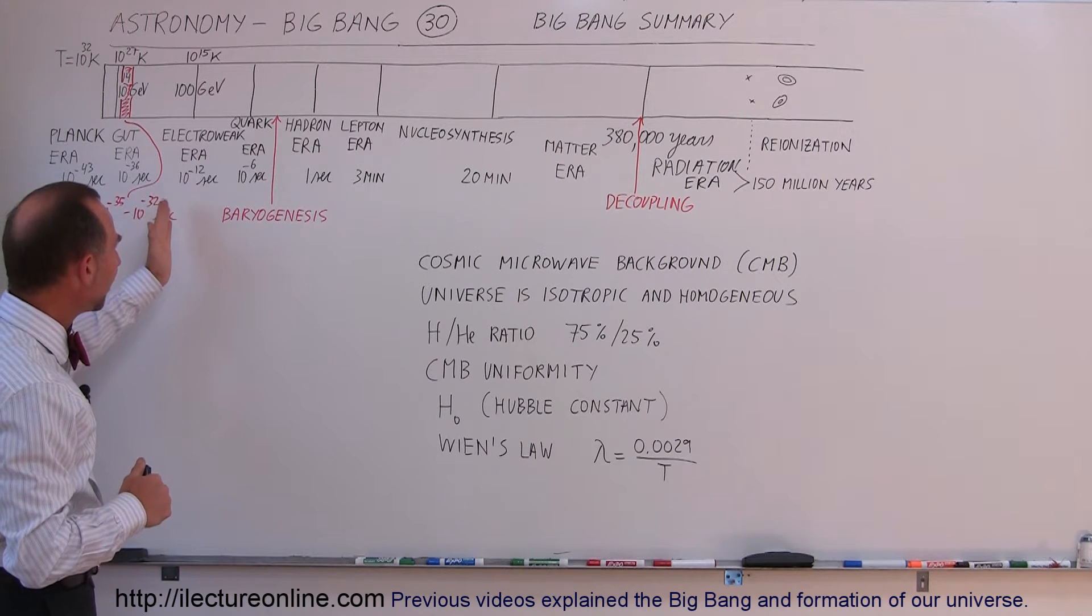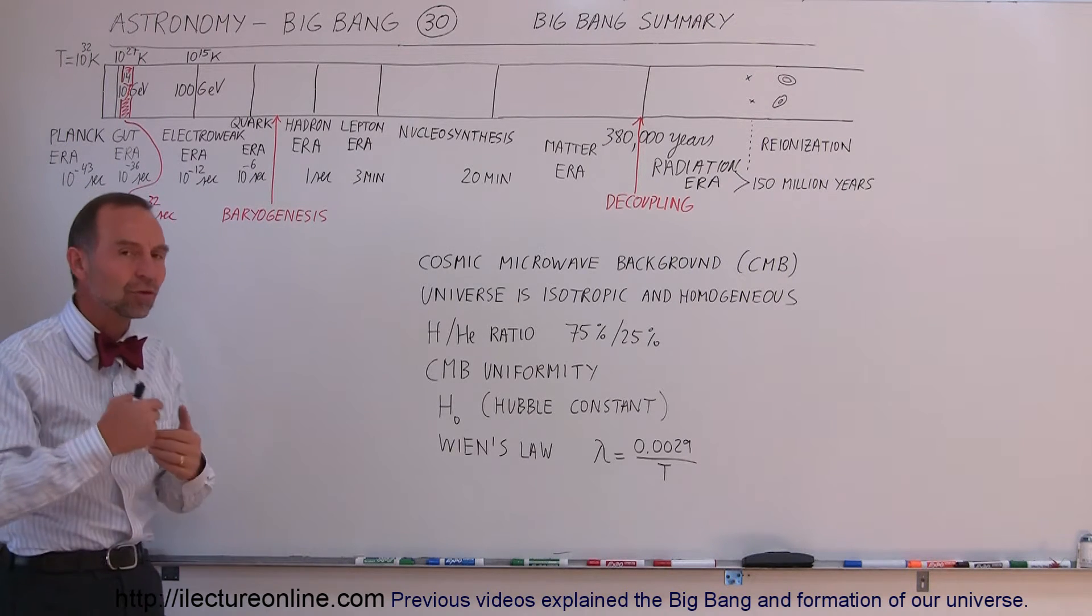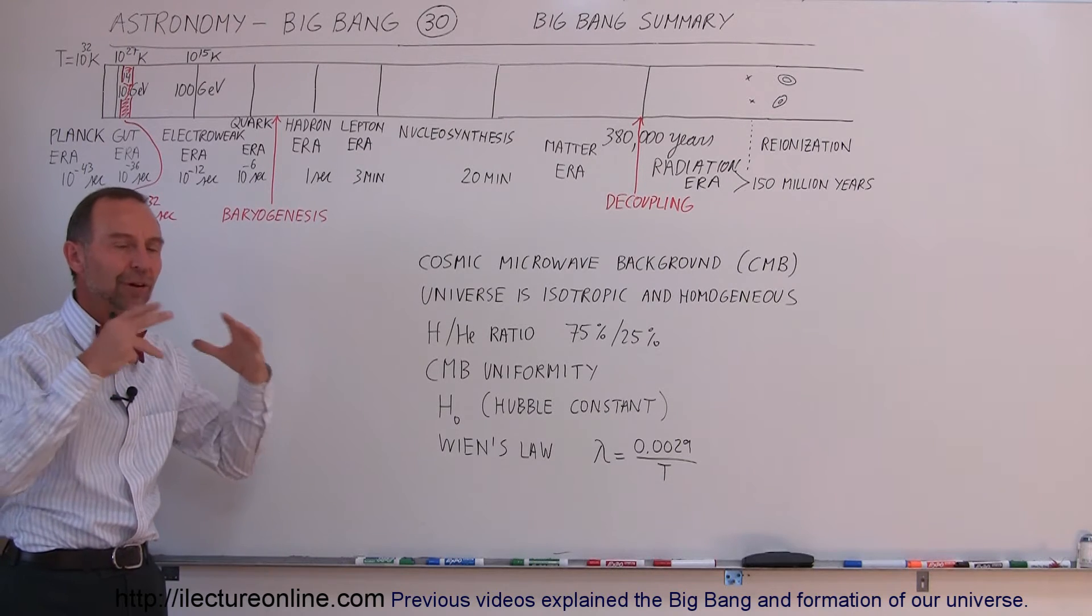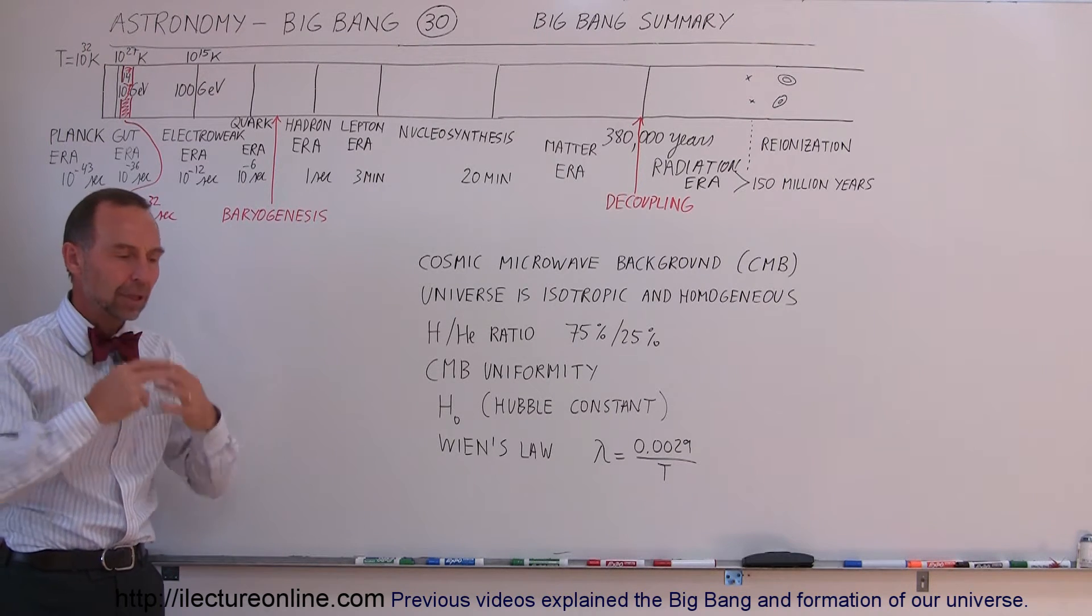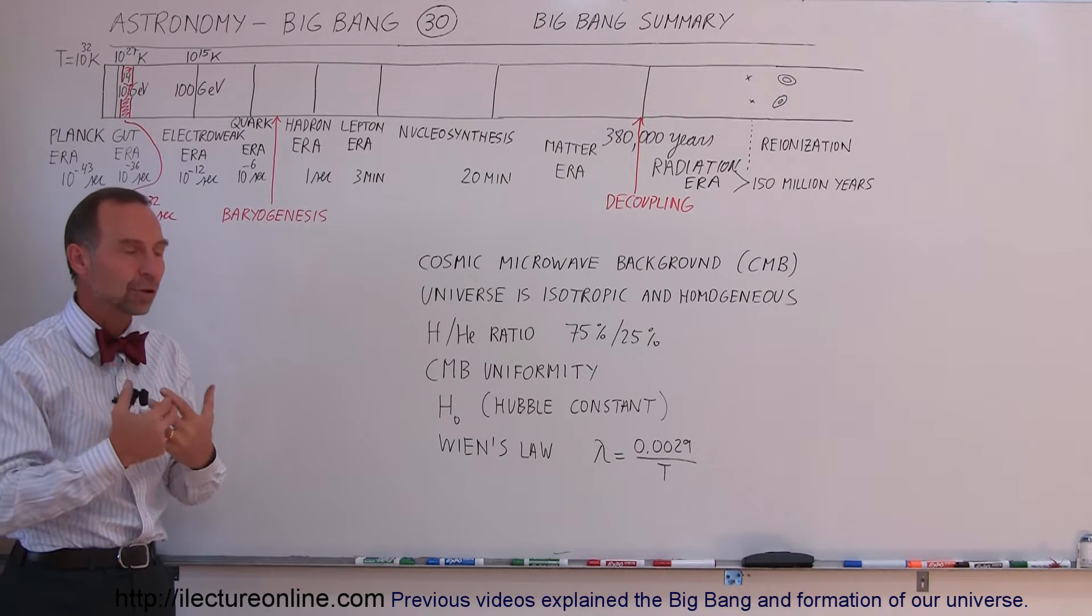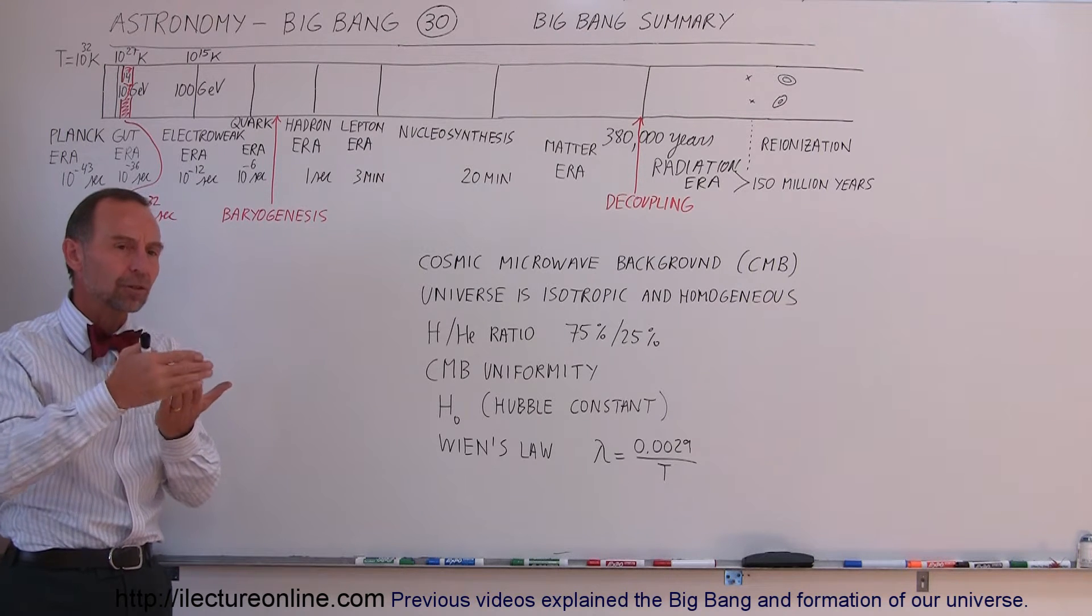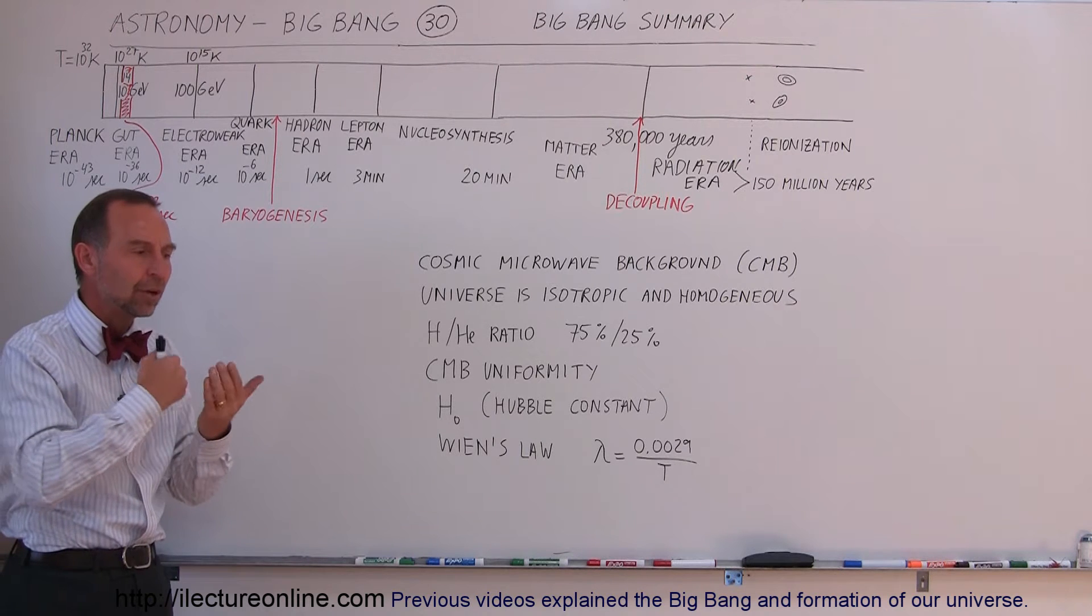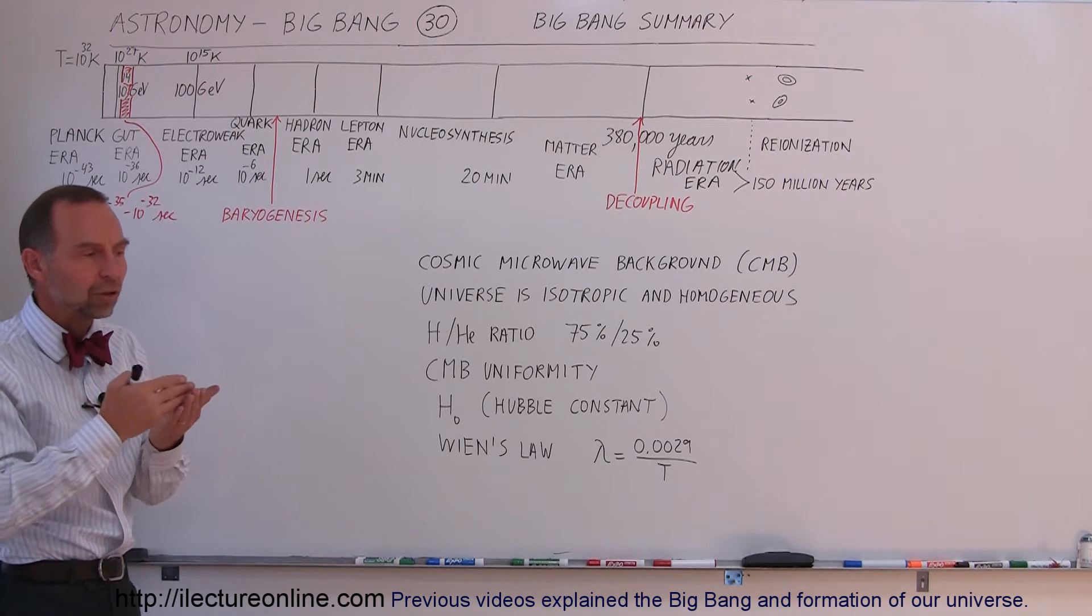We also know that in the very first fraction of a second to several seconds into the beginning of the Universe, matter began to form from the very high energetic radiation that was there in the Universe. First, the large particles - the hadrons, the baryons - that have large masses, because it requires a lot of energy to make those particles.